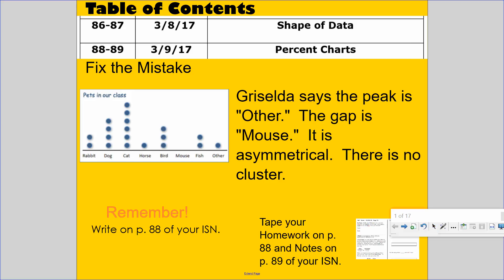So we have rabbit, dog, cat, horse, bird, mouse, fish, and other. Two students chose rabbit and so on. Griselda says the peak is other. I mean, most people, the mode is other. No, it's not. It's actually cat. The peak is at cat. Six students chose cat.